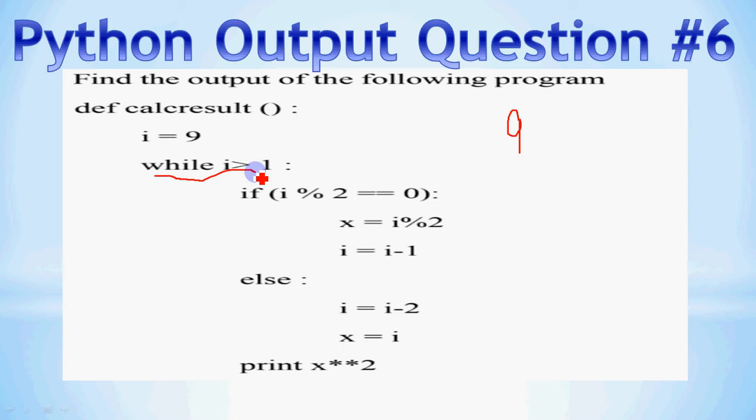So while i is greater than 1, that means while 9 is greater than 1, true for the first time. So 9 greater than 1 true, is my working which I am showing here. So you can also show your working on the side for the examiner to check. So 9 greater than 1 is true.